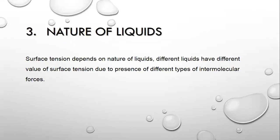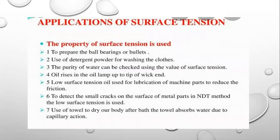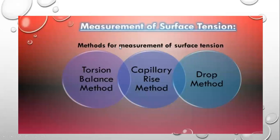Next is the nature of liquid. Surface tension depends on the nature of liquid. Different liquids have different values of surface tension because of different types of intermolecular forces of attraction. Applications of surface tension include: preparing ball bearings or bullets; use of detergent powders for washing clothes; purifying water can be checked by the value of surface tension; oil rising in an oil lamp up to the tip of the wick; low surface tension oils used for lubrication of machine parts to reduce friction; and use of a towel to dry the body after a bath, which absorbs water due to capillary action, which is basically because of surface tension. Surface tension can be measured by three methods: torsion balance method, capillary rise method, and drop method.